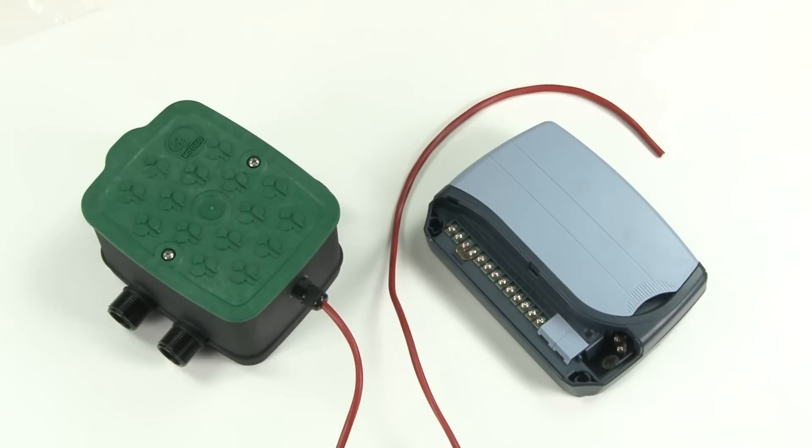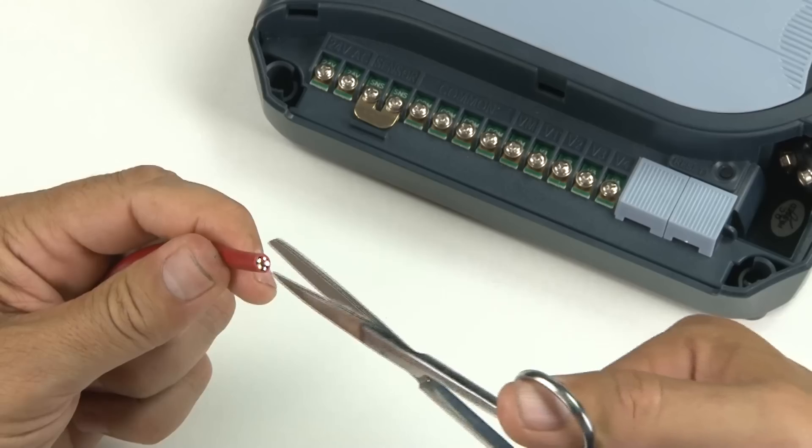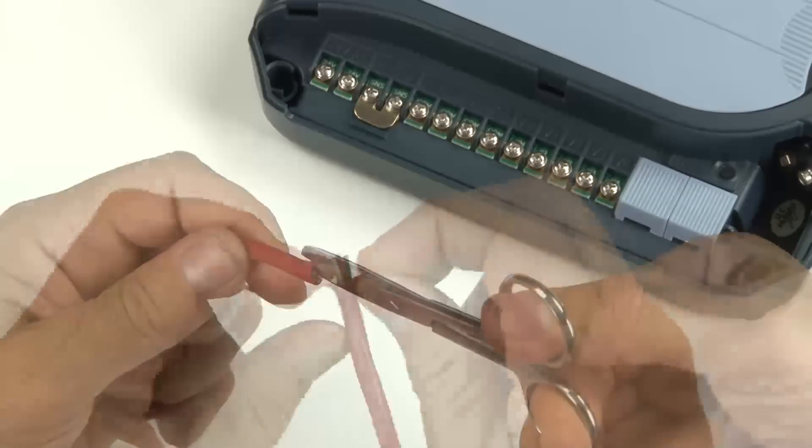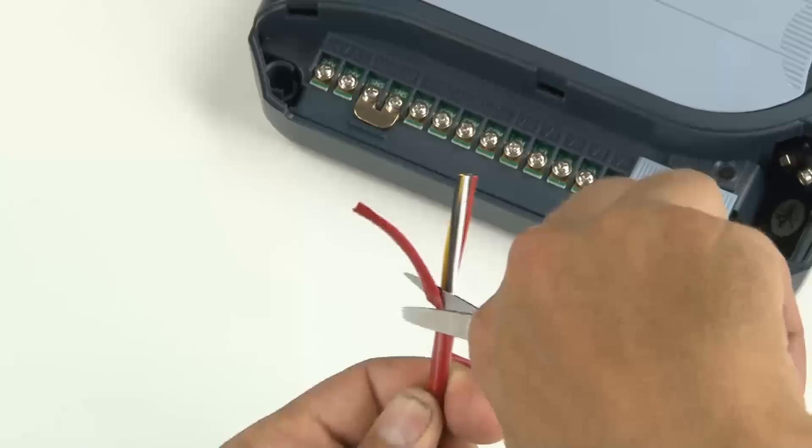Once you have decided on the location of your valve box in your garden, you will need to connect the wires from your EasyValve 4 back to your controller. Strip the ends of your wires ready for connection to your controller as you did with the other end or as recommended by your controller instructions.